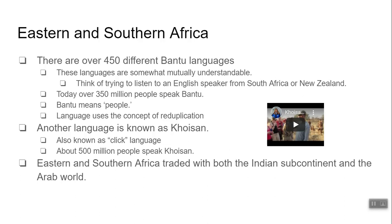The Bantu group has about 450 different Bantu languages or dialects. They are somewhat mutually understandable — somebody from Kenya can sort of understand somebody from the Congo, but there are differences. The best modern example would be English speakers: someone from South Africa, New England, Ireland, or Scotland all speak English, but the dialects are very different and sometimes hard to understand. Similarly, the Romance languages like Spanish, French, and Italian are technically different but share similarities. Today there are over 350 million people who speak Bantu, and the word 'bantu' itself means 'people.'